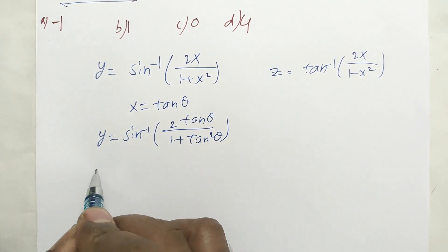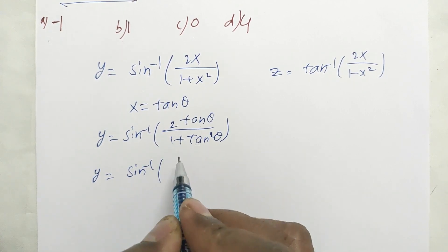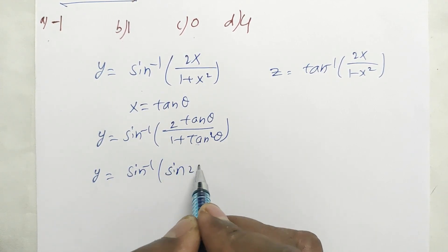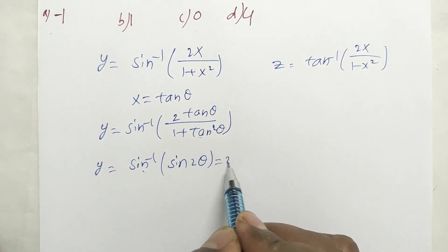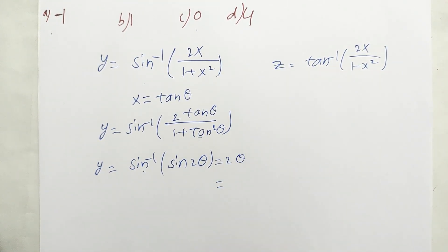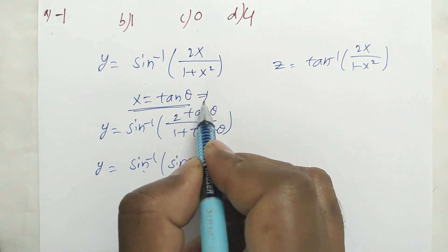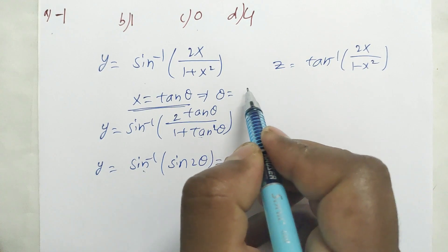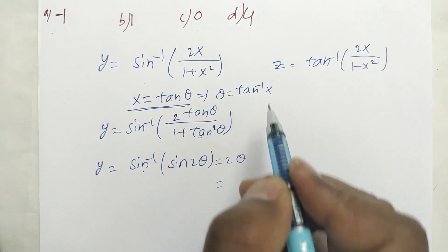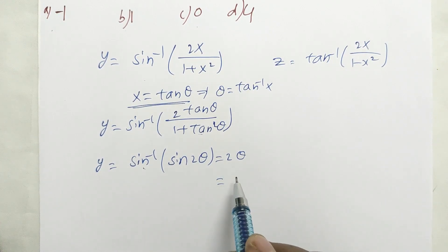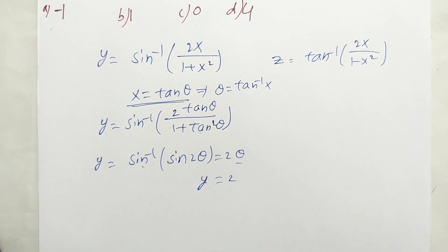So Y = sin⁻¹(sin 2θ). By the formula, sin⁻¹(sin 2θ) = 2θ. Since x = tan θ, we have θ = tan⁻¹(x). Therefore Y = 2·tan⁻¹(x).